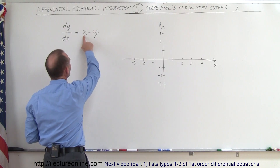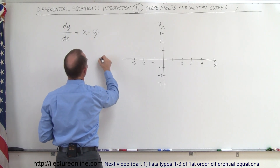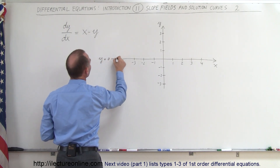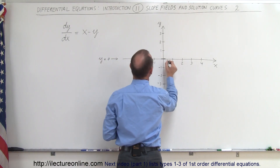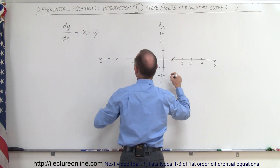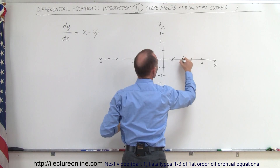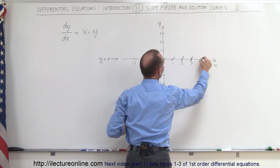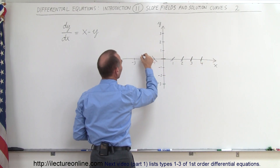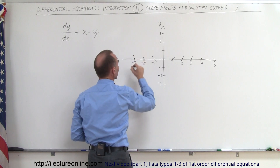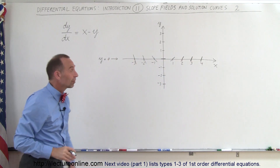When x equals 0, slope is equal to 0. On the x-axis where y equals 0, the slope will be 0 here, 1 here, 2 here, 3 here, 4 here — because the slope equals x. Over here on the negative side, the slope will be negative 1, negative 2, negative 3. You can see how the slope changes along the x-axis.